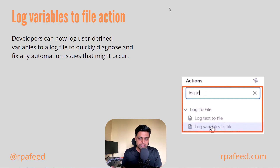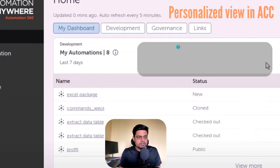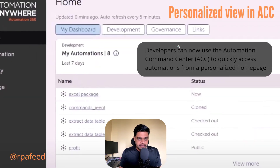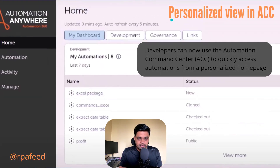Now with this feature — log variable to file — you'll be able to log variables as well from the task bot. Then we have ACC: the customized view in ACC, or you can call it a personalized view in ACC.